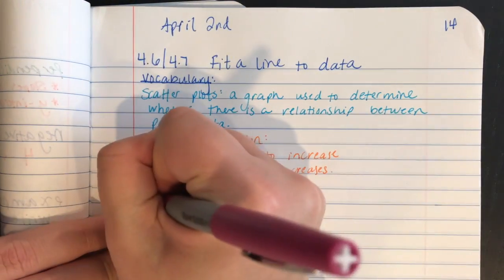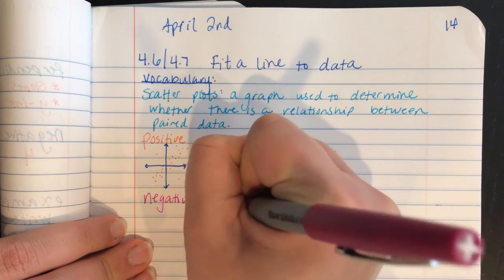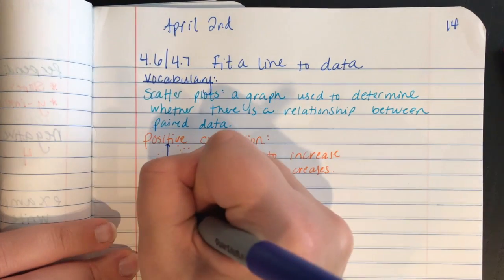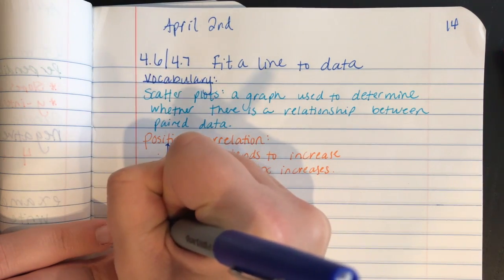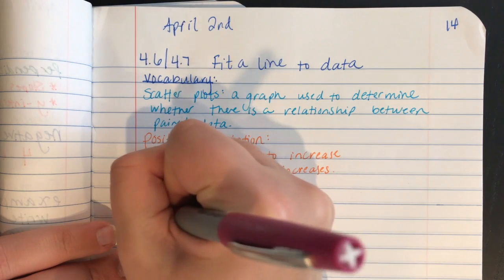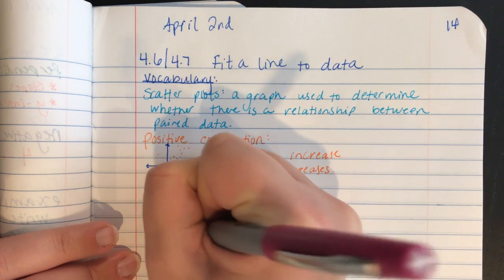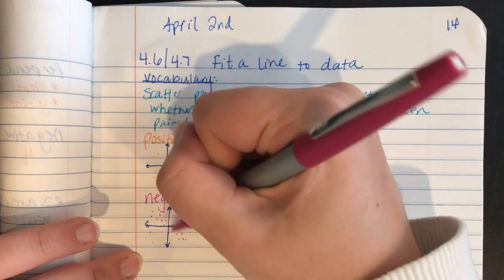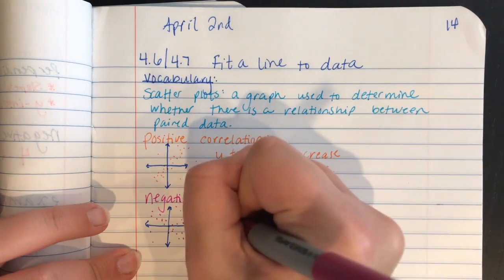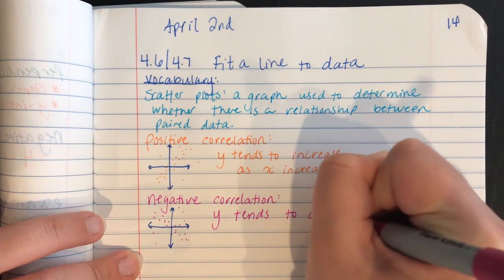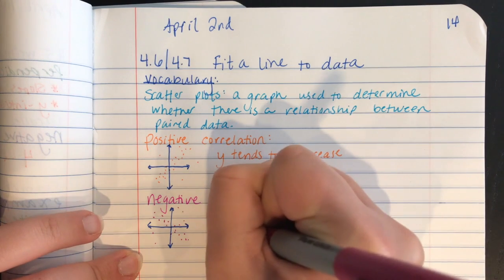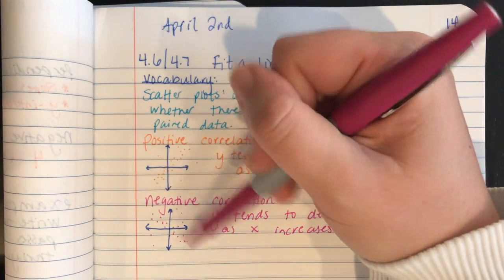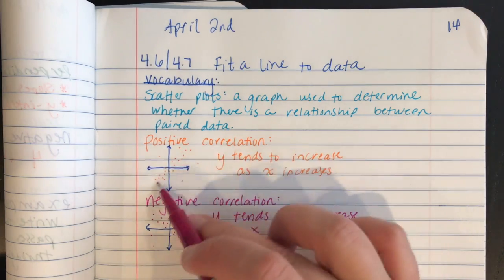The second kind of correlation you can have is a negative correlation, which you can also probably guess what this is going to look like. If I have my graph and my values, as x increases, y is going to decrease. And again I might have some outliers, but for the most part my data is going to follow this trend. So if you had a table, y tends to decrease as x increases. Or another way to think about it is my slope, if I were to draw a line through this, would be negative, where here if I were to draw a line through it, it would be positive.